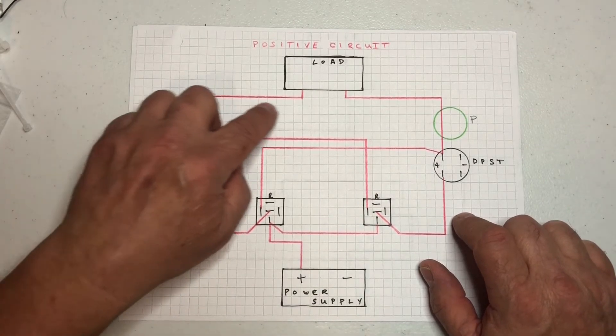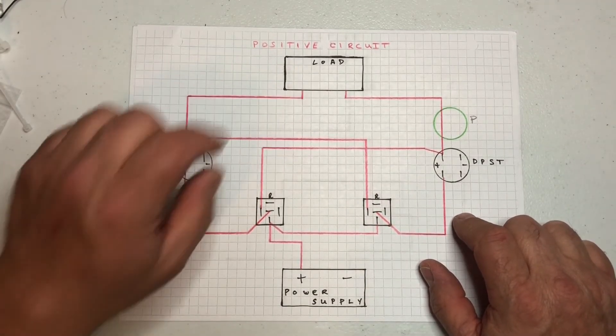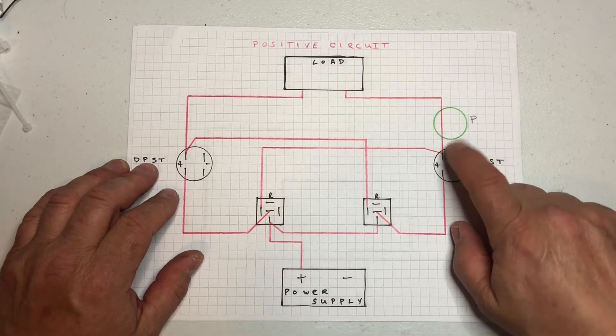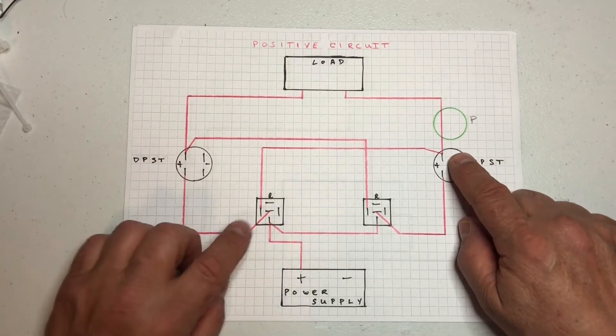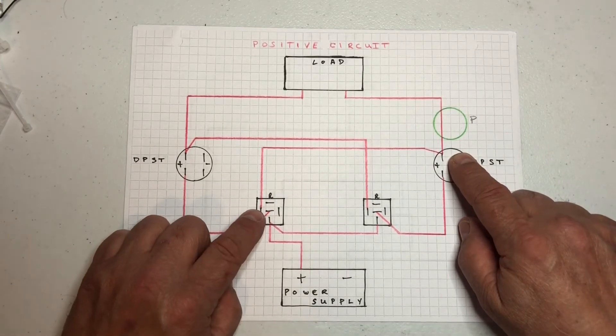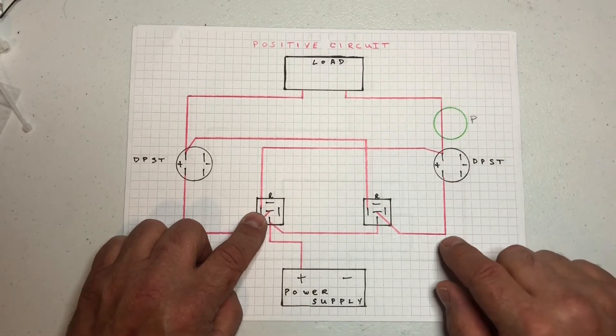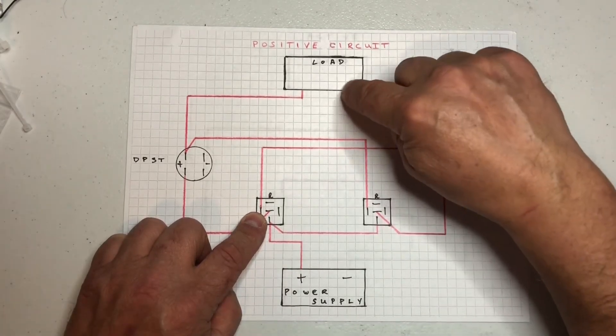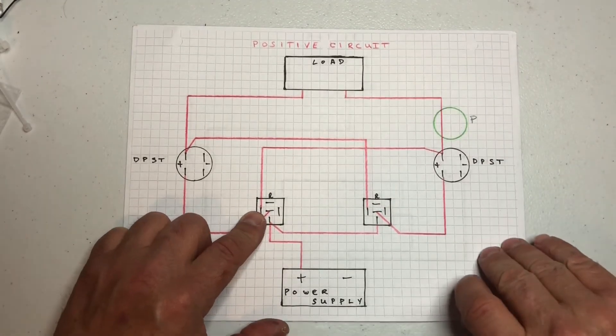But if I flip this switch then it'll put positive through here. The same would be with this side—if we applied positive here it would open this switch and then your positive would continue on through here, putting positive to this side of the motor.